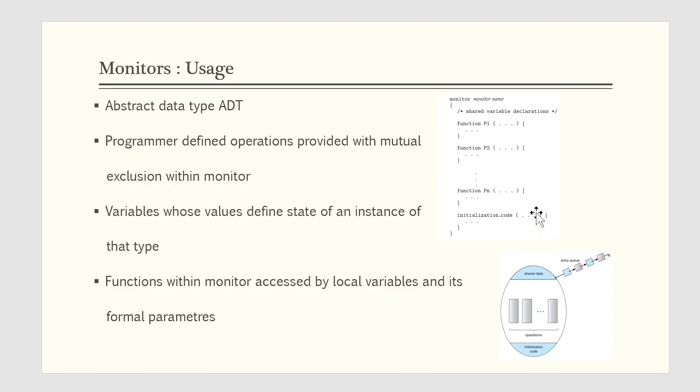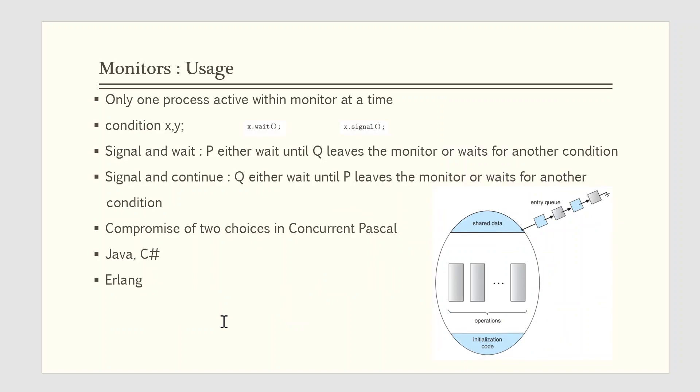The representation of a monitor type cannot be used directly by the various processes. Thus, a function defined within a monitor can access only those variables declared locally within the monitor and its formal parameters. Similarly, local variables of a monitor can be accessed by only the local functions. The monitor construct ensures that only one process at a time is active within the monitor. Consequently, the programmer does not need to code this synchronization constraint explicitly.